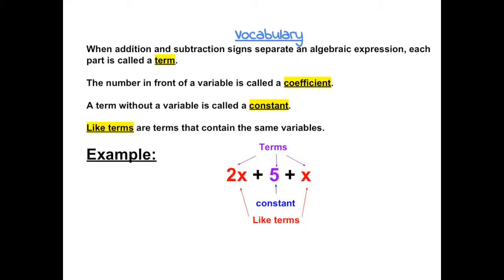The number in front of a variable is called a coefficient. So the 2 is a coefficient because it's in front of a variable. And there's actually a 1 in front of every variable when we don't see a number, because 1 times that variable is always itself. So the coefficients in this expression would be 2 and 1.